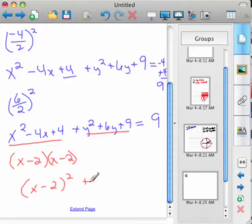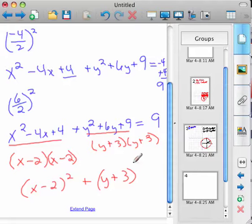The y squared plus 3. This is plus plus. So, it would be 3 and 3, right? So, y plus 3 squared. And you have your circle. There was a circle before, but now it's a circle where you can find the center.